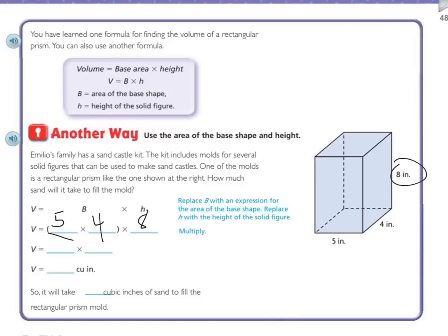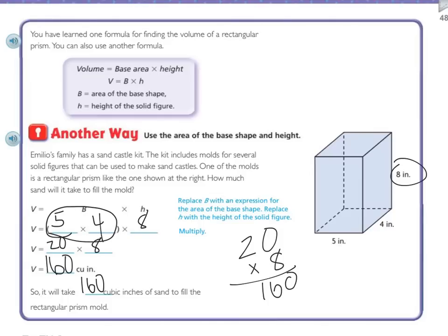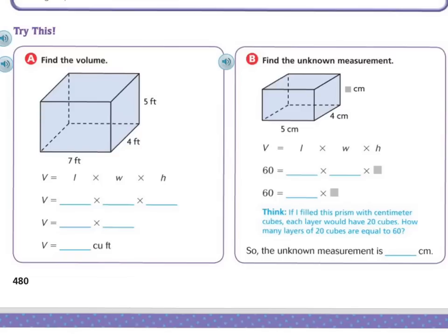So the volume is 5 times 4, which is the base, which is 20, times the height, which is 8. And 8 times 20, so 20 times 8. 8 times 0 is 0. 8 times 2 is 16. So we get 160 inches cubed. So it will take 160 cubic inches of sand to fill the prism. And the other way we write that is 160, and then you say inches, and you put the little cube sign.